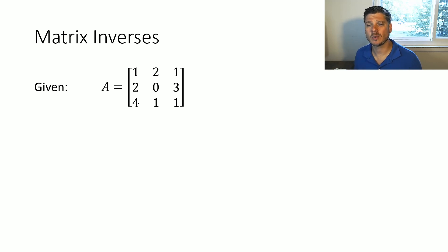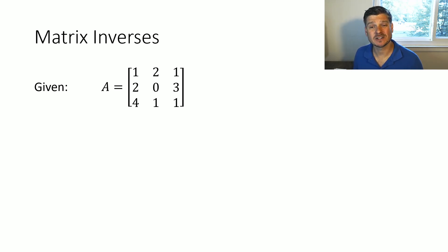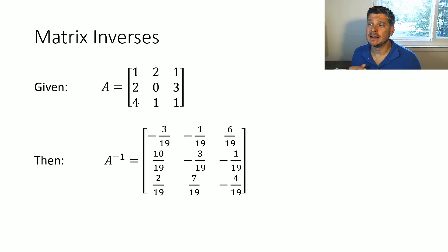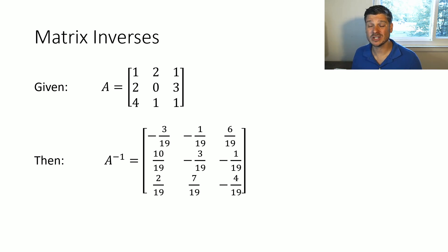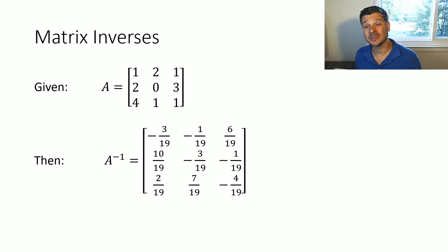The inverse of a matrix is typically given as A to the negative one. When we talk about inverse matrices, we typically have to talk about square matrices, since the identity is also a square matrix. Whether you left-multiply or right-multiply by the inverse, you still get back to the identity: A times A-inverse equals I, and A-inverse times A equals I. So for matrix A — one, two, one / two, zero, three / four, one, one — there is a clever way to find the inverse yourself, but in practice technology finds it for us. The inverse turns out to be a matrix with fractions all having denominator 19.